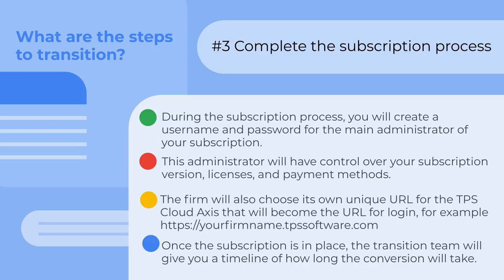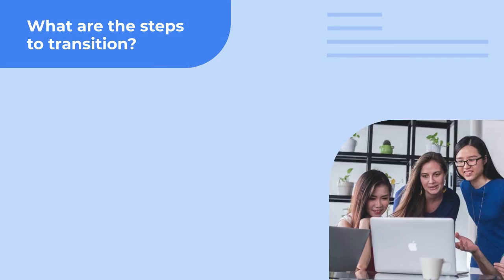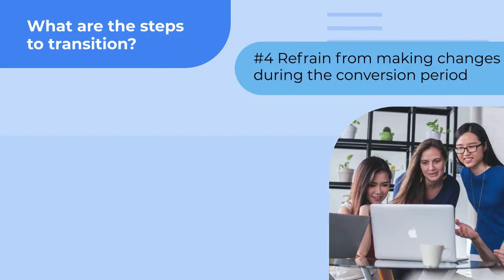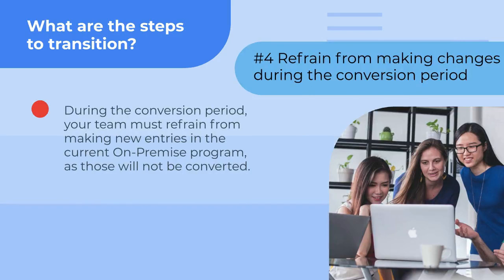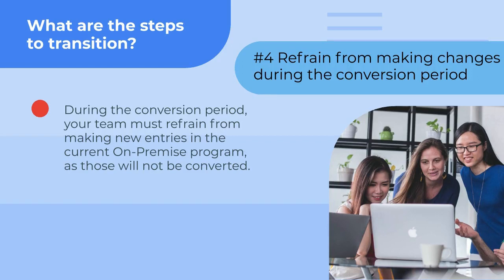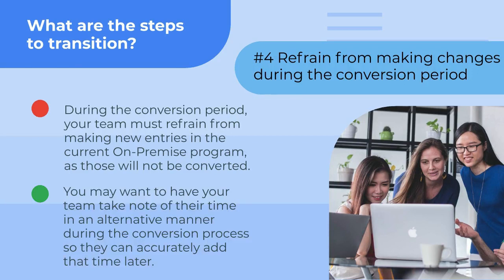Once the subscription is in place, the transition team will give you a timeline of how long a conversion will take. Number four is to refrain from making changes during the conversion period. Your team must refrain from making new entries in the current TPS on-premise program, as those items will not be converted. You may want to have your team note their time in an alternative manner during the conversion process so they can accurately add that time later. Since the conversion process does not take long, this should not be too tedious.